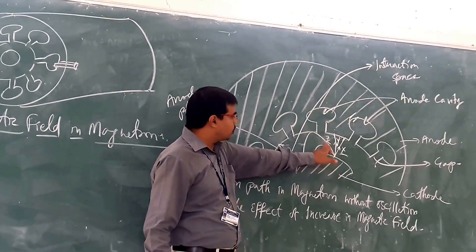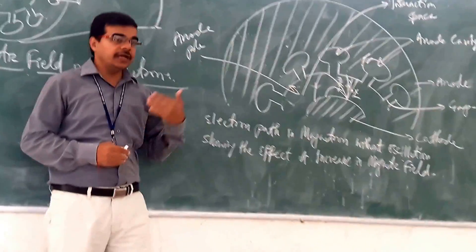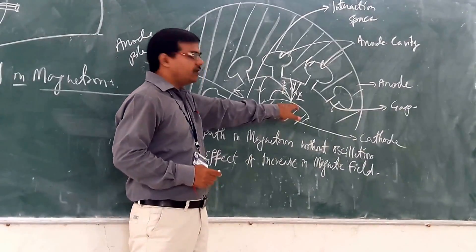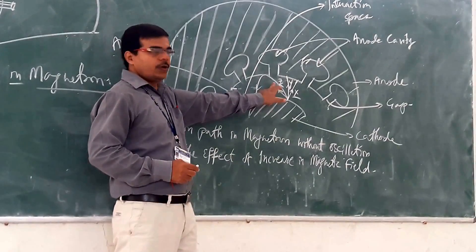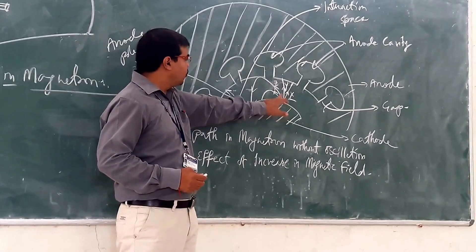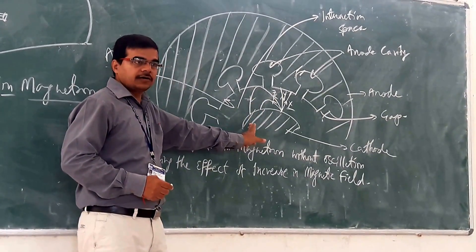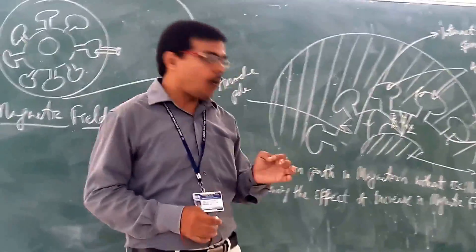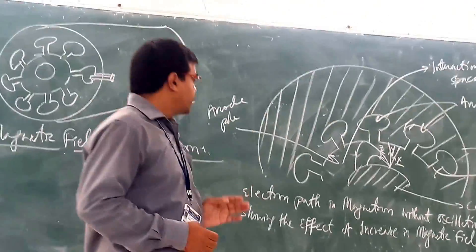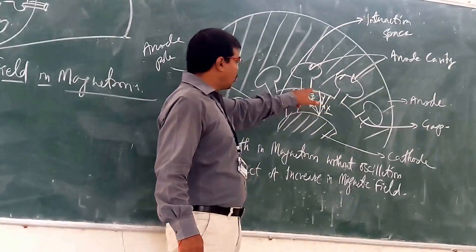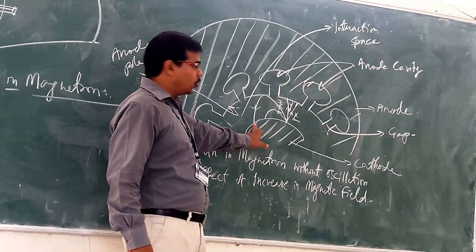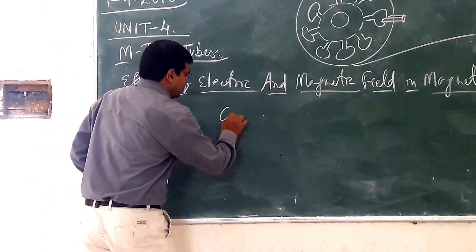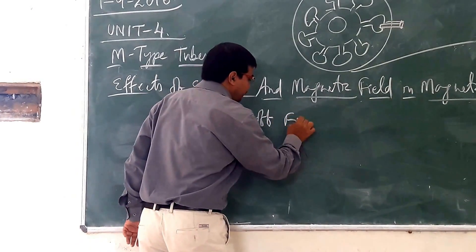From the cathode, the electron moves toward the anode, and if we increase the magnetic field further, the electron follows path Z — it moves from the cathode toward the anode and then returns back to the cathode. The point at which the electron returns to the cathode is called the cut-off field.